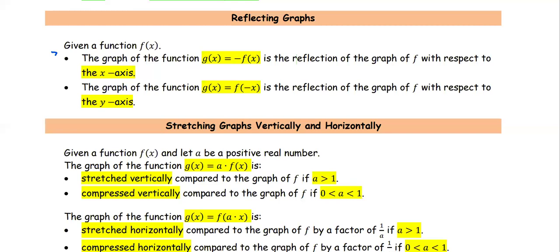For reflecting graphs: given a function f(x), the graph of the function g(x) = −f(x) is the reflection of the graph of f with respect to the x-axis. We can say that if the graph is on the upper portion, it will be reflected about the x-axis to be down below, or vice versa. The graph of the function g(x) = f(−x) is the reflection of the graph with respect to the y-axis.